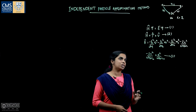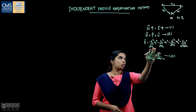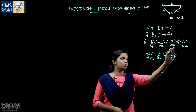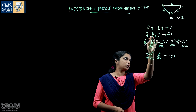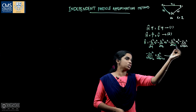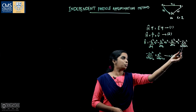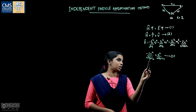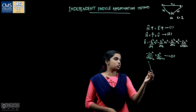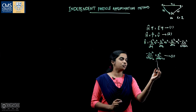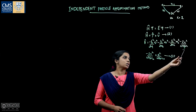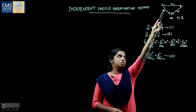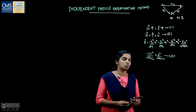The first three terms constitute the kinetic energy part: one for the nucleus and one each for electron 1 and electron 2. The remaining three terms constitute the potential energy: the attraction between the nucleus and electron 1, the attraction between the nucleus and electron 2, and the repulsion between electron 1 and electron 2. Here r₁ is the distance between the nucleus and electron 1, r₂ is the distance between the nucleus and electron 2, and r₁₂ is the distance between electron 1 and electron 2.